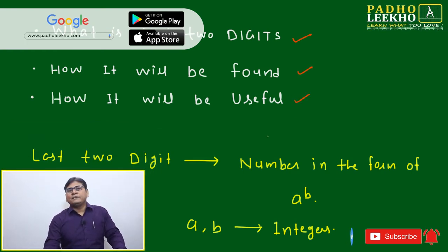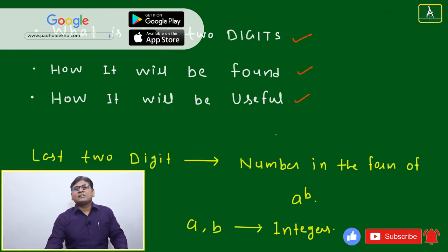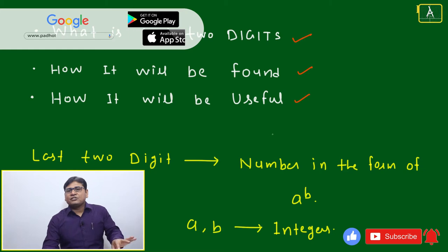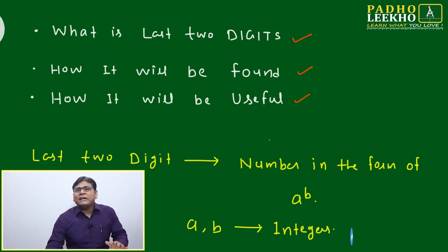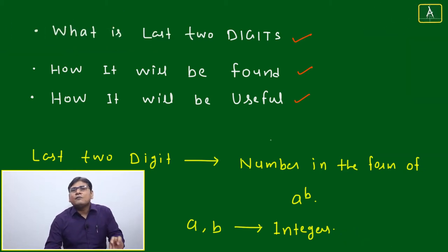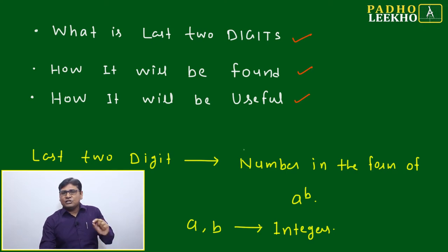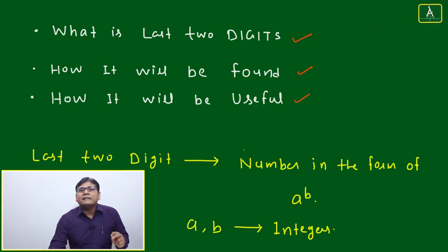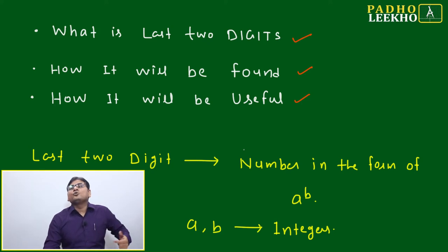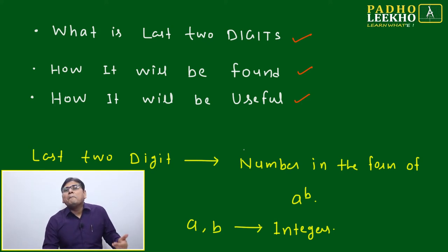We will understand what the last two digit is, how it is found, and its applications. This session is mainly focused on numbers ending with one, because this is the most basic case. Once you understand this shortcut technique, you will be able to apply it to numbers ending with other digits as well.